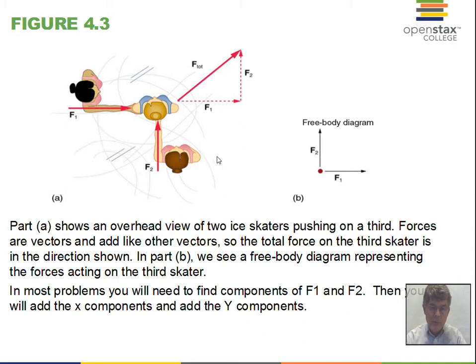The free body diagram will be an important concept. Instead of cluttering up our diagram with stick figures, we'll represent the person with a dot at the center of mass. We have the two forces that act on the person. In our free body diagram we only put forces that act on the object of interest. If we're interested in what happens to this person because of the two forces being applied, we only draw those forces.